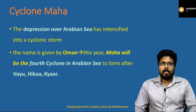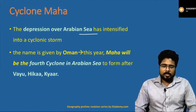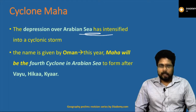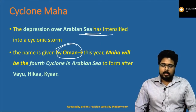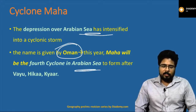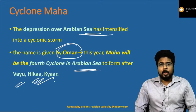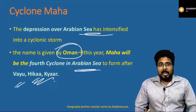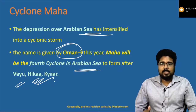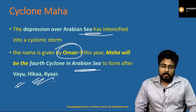Cyclone Maha is also in the Arabian Sea and has intensified into a cyclonic storm. The name was given by Oman. Maha is the fourth cyclone in the Arabian Sea to be formed after Vayu, Hika, and Kyar. Generally, the Arabian Sea sees fewer cyclones than the Bay of Bengal, but recently the number of cyclones in the Arabian Sea has been increasing.